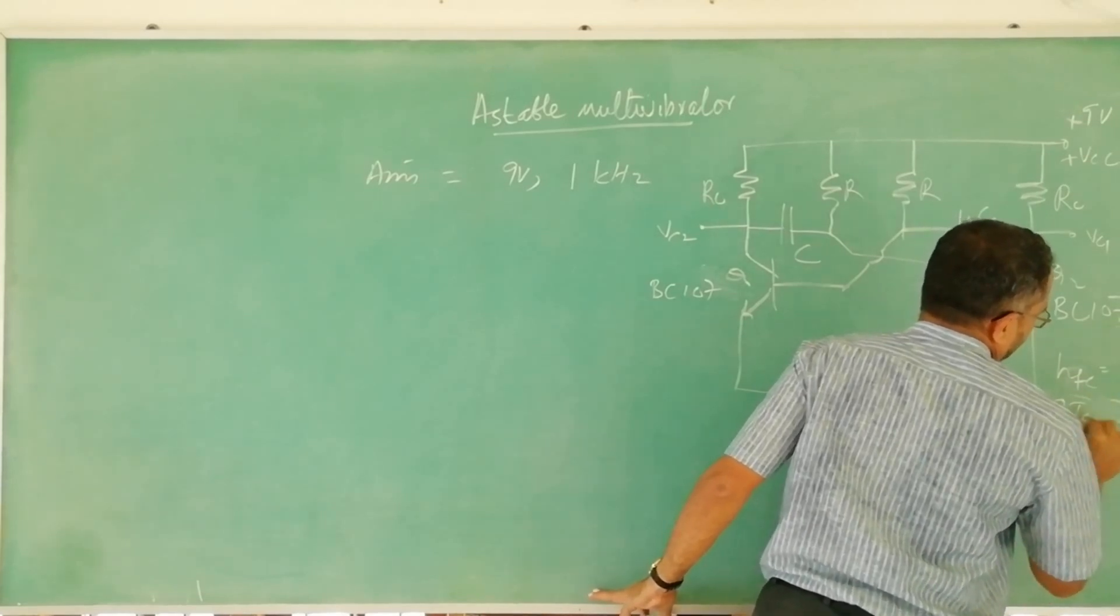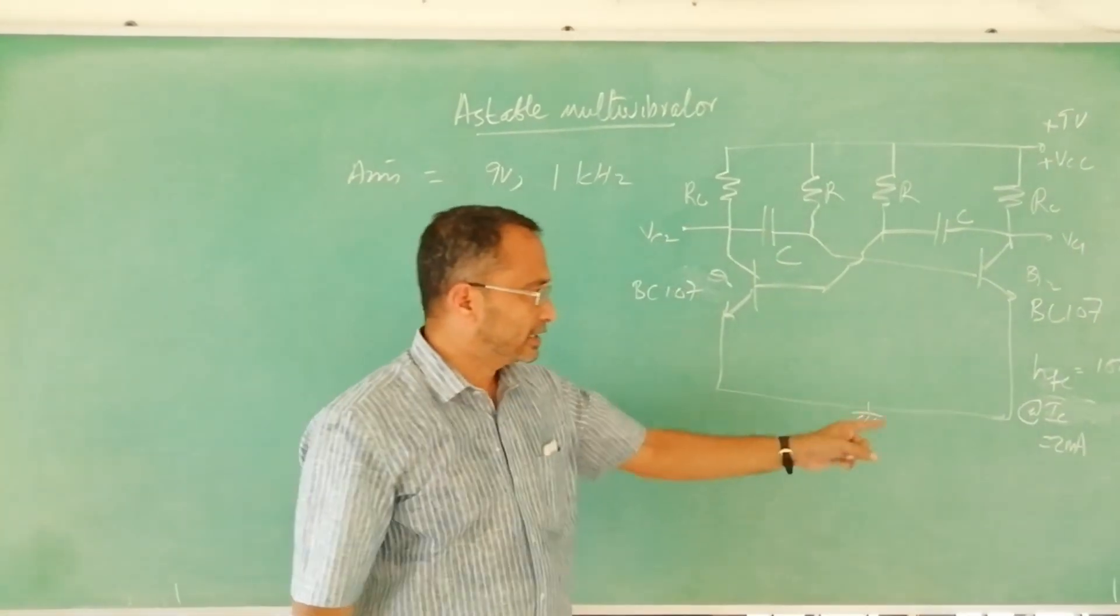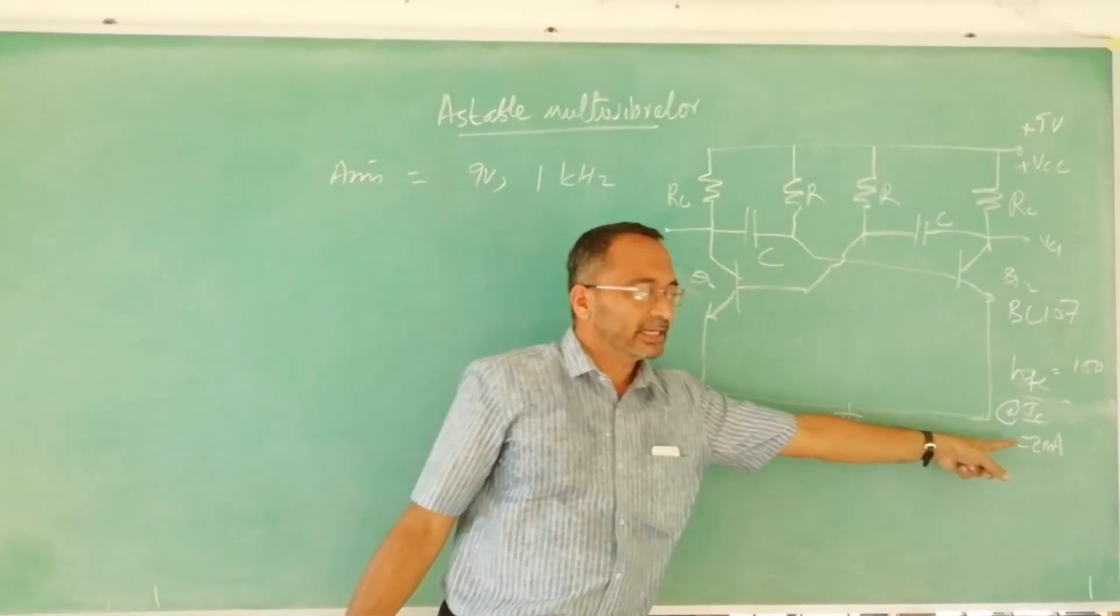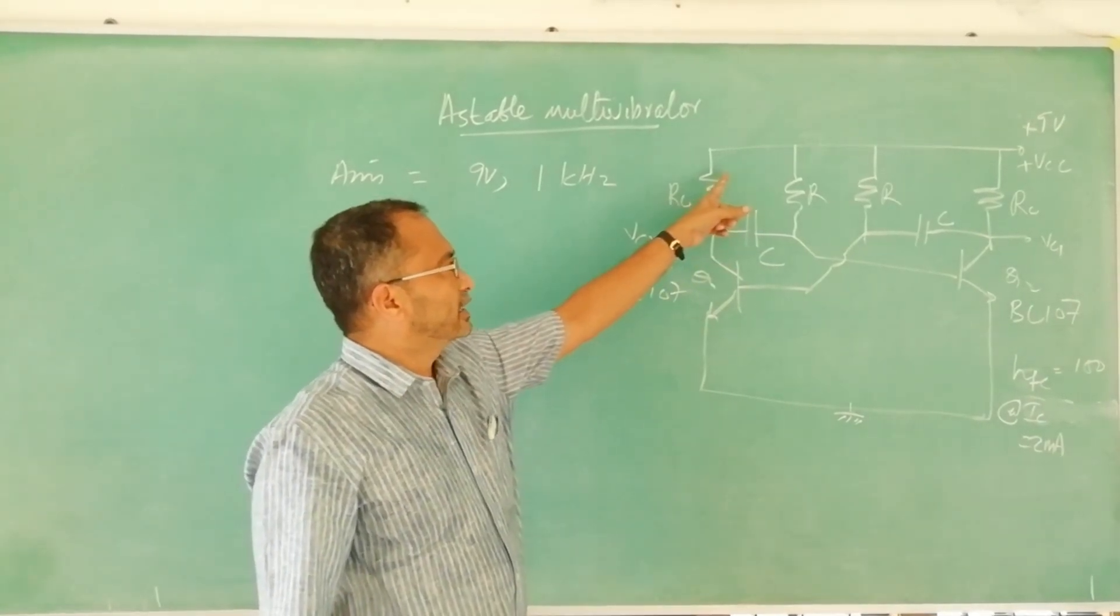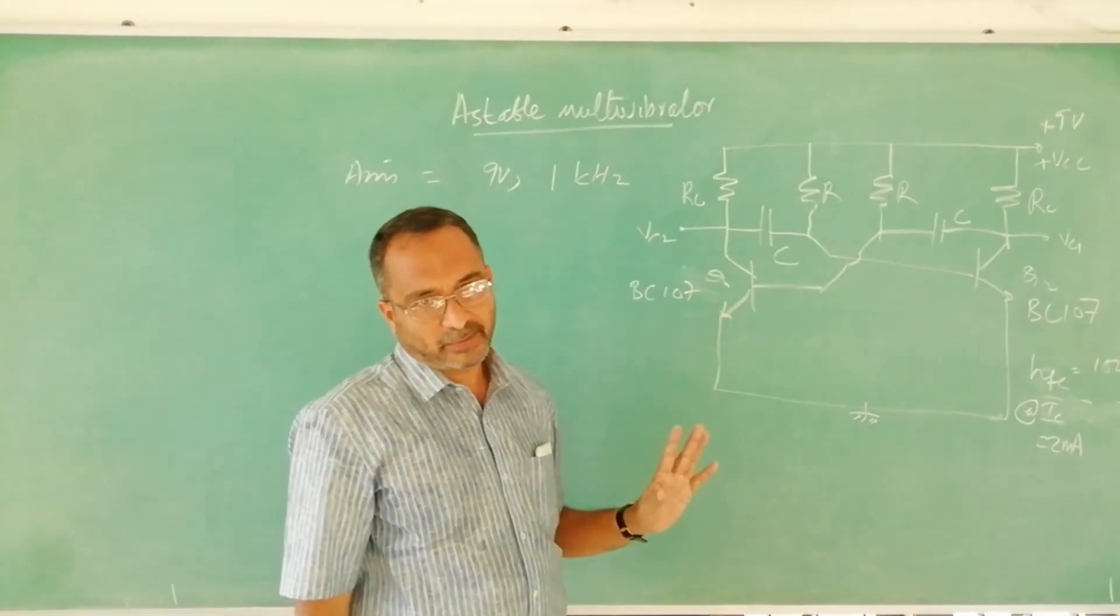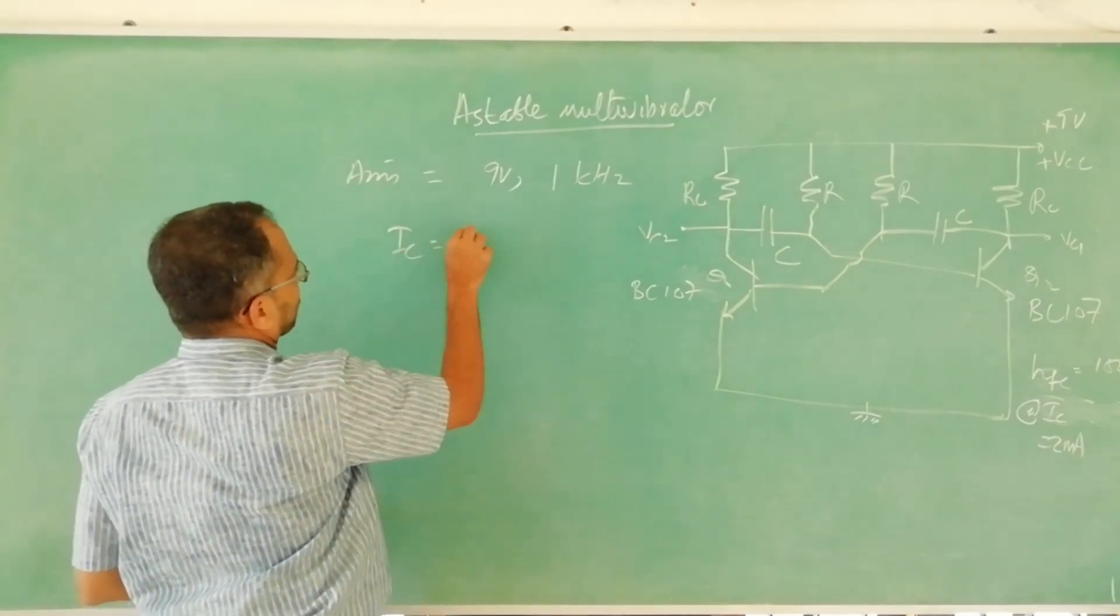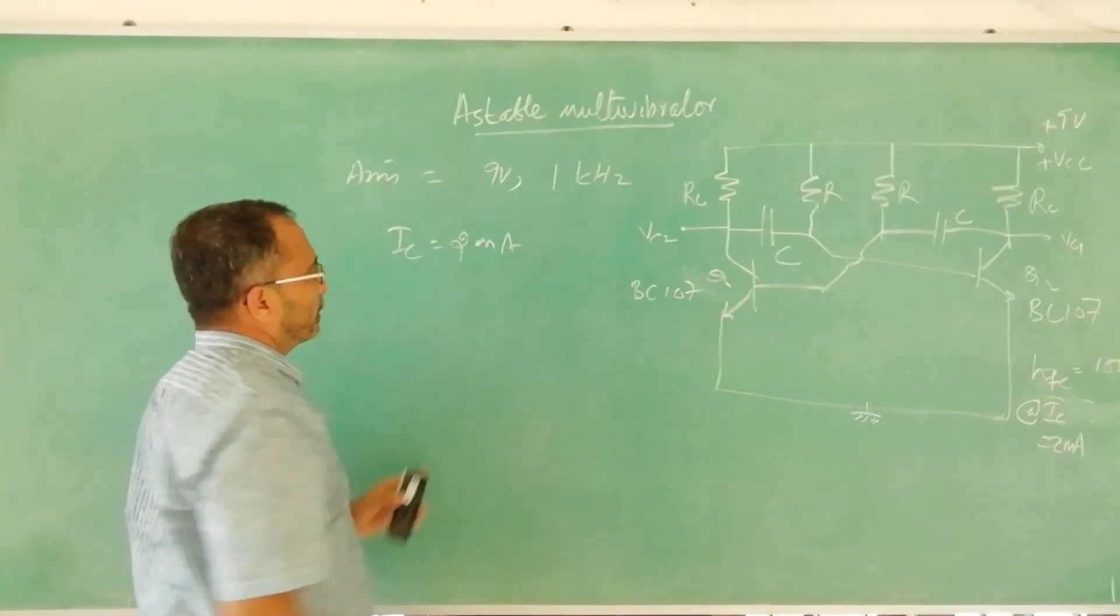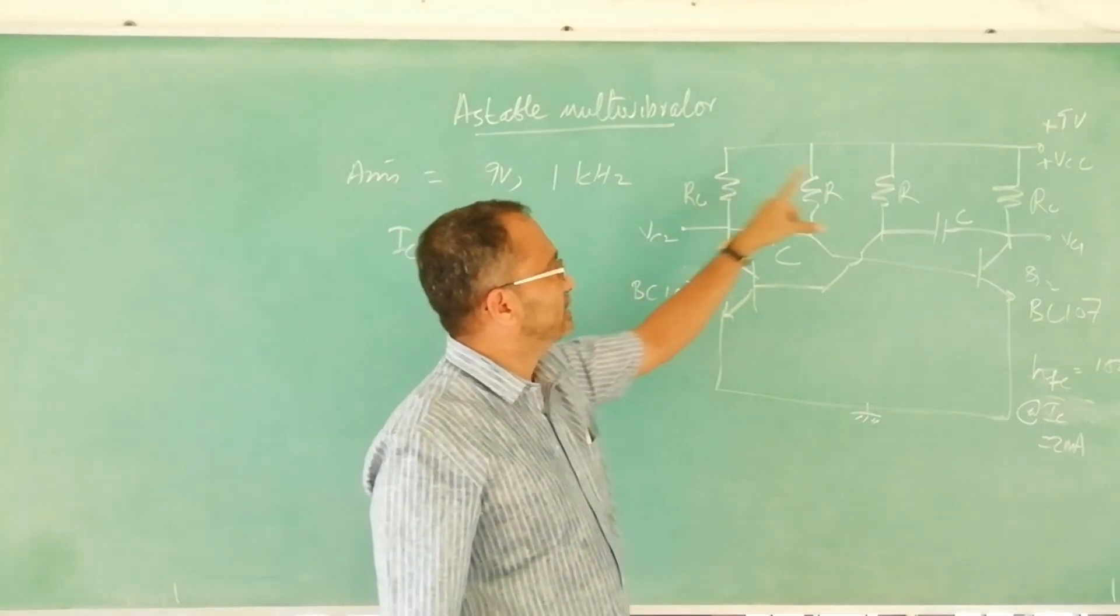At IC is equal to 2 milliampere, that means hFE minimum guaranteed at 2 milliampere. So that's for that reason we shall assume IC through this is 2 milliampere. So IC we select the IC is equal to 2mA. Once IC is selected we can now decide and find the values for RCs and Rs.